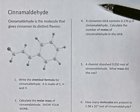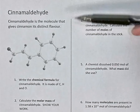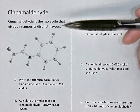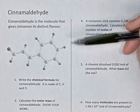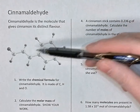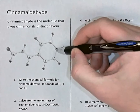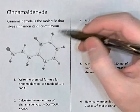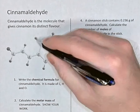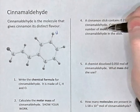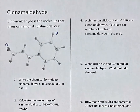We have here a molecule called cinnamaldehyde, which is the molecule that gives cinnamon its flavor. We're shown a structural formula that shows how all the different atoms in cinnamaldehyde are connected. We see carbon atoms, these darker little guys here are hydrogen atoms, and then this one larger atom is an oxygen atom.